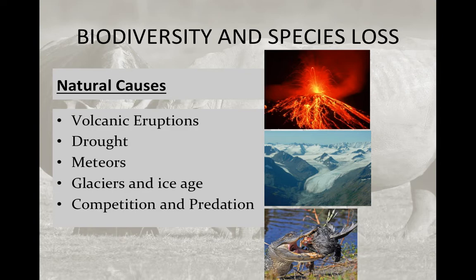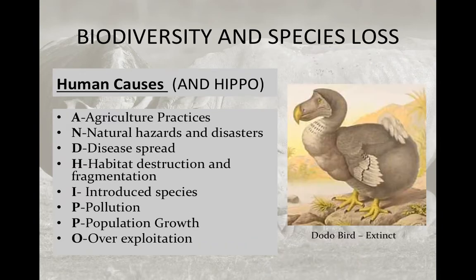Natural causes of species loss are generally catastrophic events: volcanic eruptions, meteors hitting the Earth, massive droughts, plagues, ice ages. But they can also be subtler — competition for food resources and habitat, or predator-prey relationships that go out of balance. If we end up with far more predators than prey, it's very easy for the prey to go extinct, sometimes followed immediately by the predators if they lose their food source.